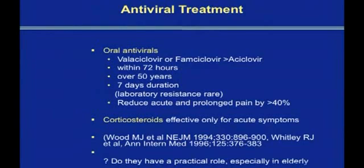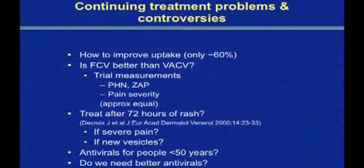The oral antivirals — valacyclovir or famciclovir — are better than acyclovir in terms of convenience, and also they give higher blood levels. You're supposed to only use these within 72 hours, but that's somewhat debatable. If you find someone who's got new lesions beyond 72 hours, and you're only supposed to treat people over 50 years, but if you've got a young person who's got severe zoster, I would be treating them as well. Laboratory resistance is very rare. Corticosteroids are not effective for post-herpetic neuralgia — they may help with the acute pain, but that's about all.